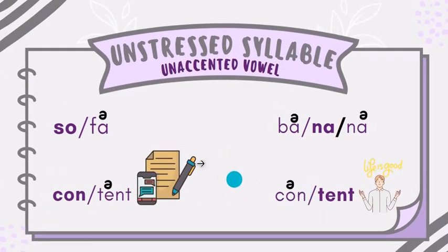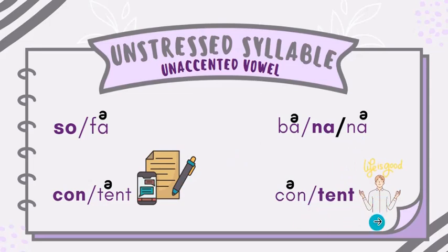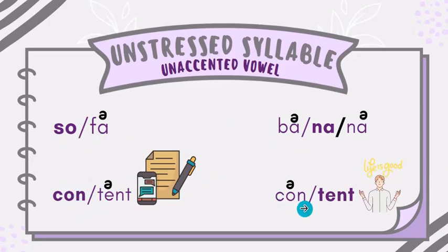This will help you further understand it. Sofa and content. 'Content' means what is included in something — like, I'm a content creator. 'Content' means you are satisfied — I'm satisfied with my life, I'm contented. So the stressed and unstressed syllable and the accented and unaccented vowel help us pronounce words clearly and also help us understand the meaning, because these two words have the same spelling but quite different meanings. Got it?